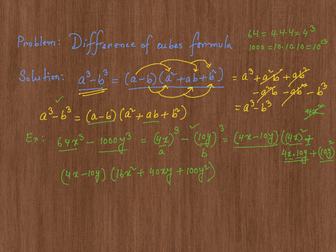Now, let's go ahead and finish it off. We found that 64 x cube minus 1000 y cube could be factored into this.